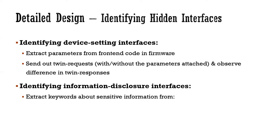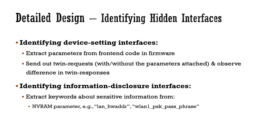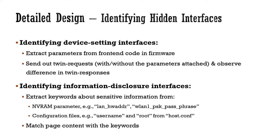To identify information disclosure interfaces, we build a dictionary of keywords and match the content of the interfaces with the keywords in our dictionary. The keywords come from two sources: NVRAM parameters and configuration files. At last we match the page content with the keywords. When at least two keywords are matched in the dictionary, IoTScope reports it as an information disclosure interface.